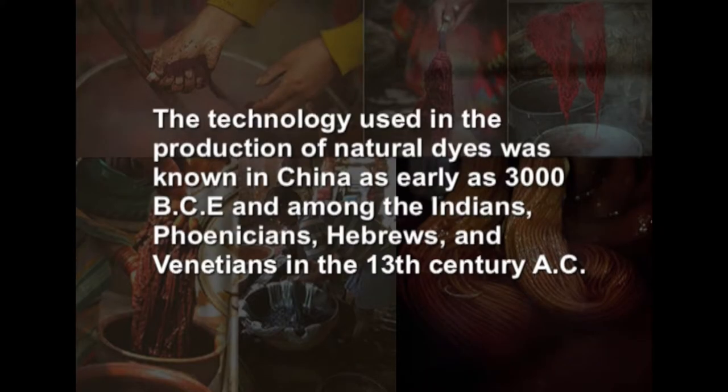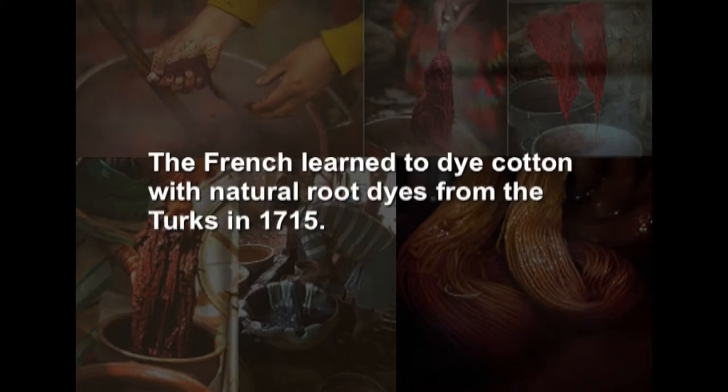Across Asia and Africa, patterned fabrics were produced using resist dyeing techniques. The technology of natural dyes was known in China as early as 3000 BCE and among the Indians, Phoenicians, Hebrews, and Venetians in the 13th century. Later it was passed on to the Greeks and Romans, and was also known in Africa, Mexico, and Peru. Turkey successfully used natural dyeing techniques and, through migrations in the Middle Ages, introduced these techniques to the world. The French learned to dye cotton with natural root dyes from the Turks in 1715.